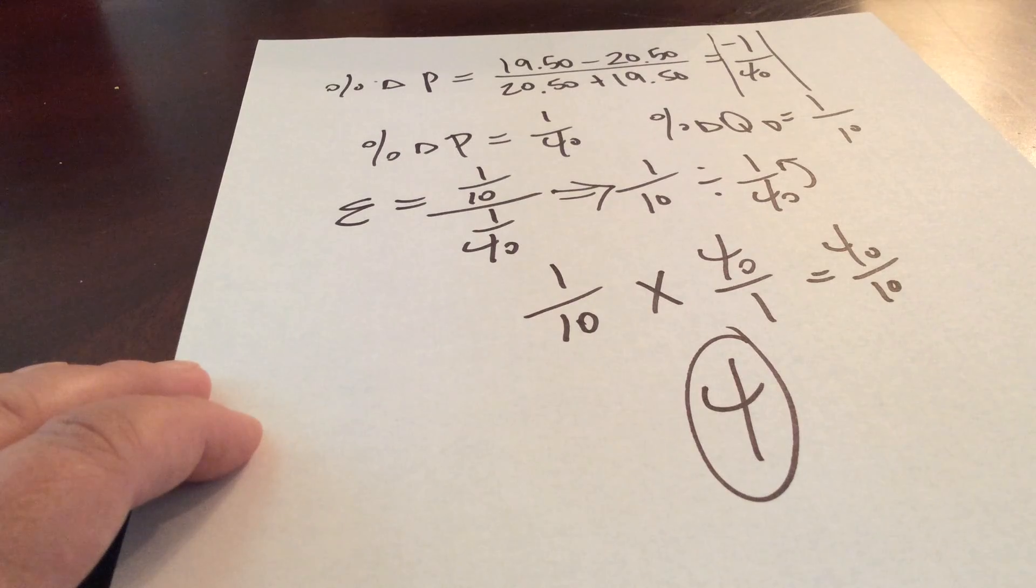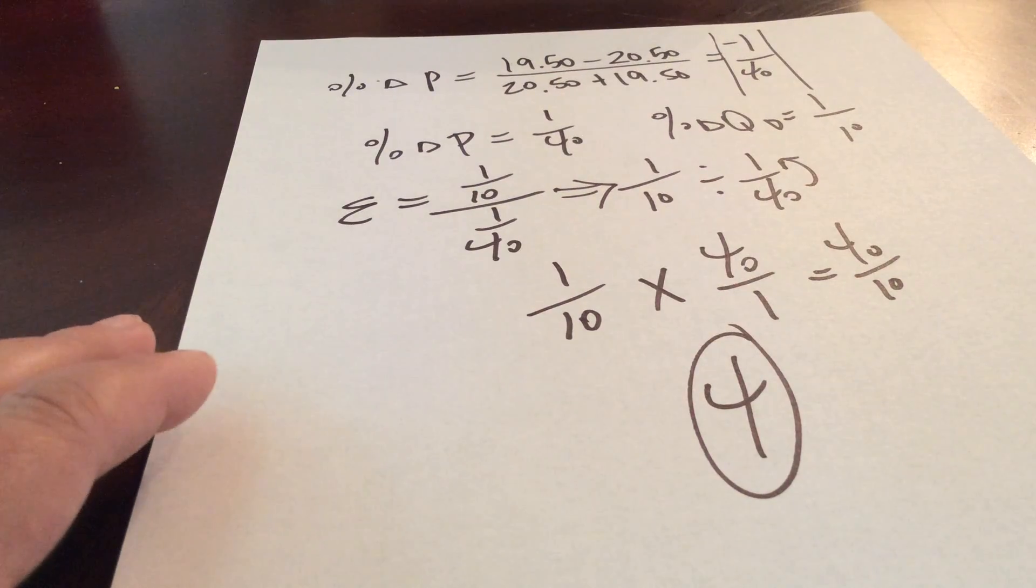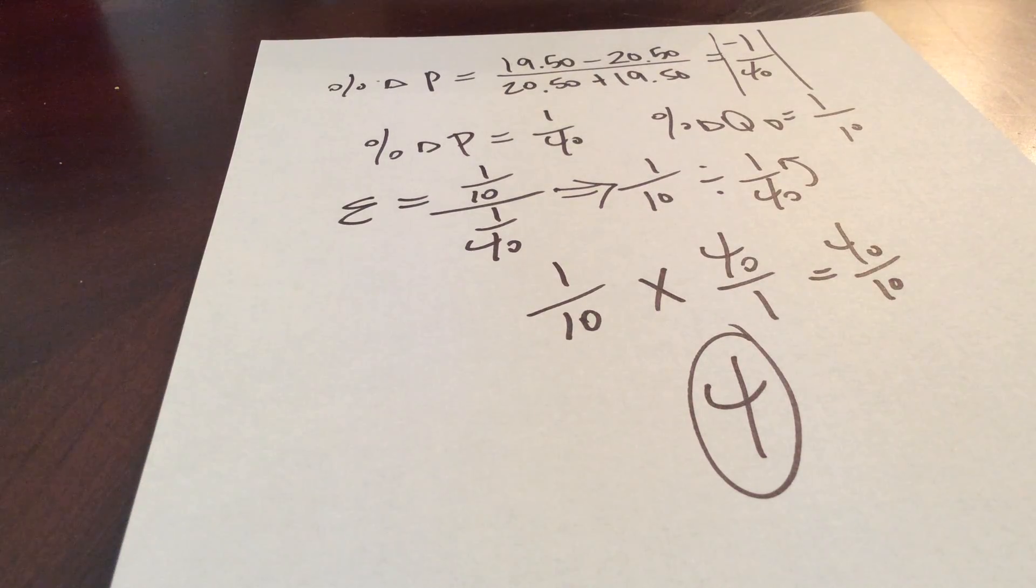Our price elasticity of demand for pizza is 4. Again, if you'll reference from the PowerPoint slides, numbers 6 through 10, you will see a different method, slightly different equations, but the same answer.